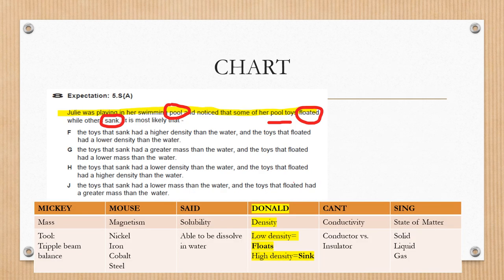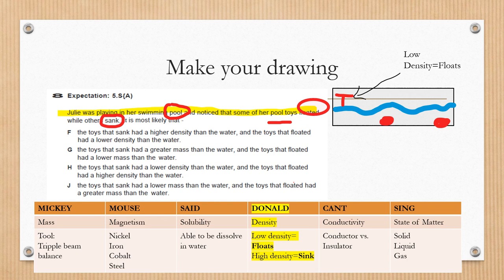Now I need to find out what property of matter is Julie noticing while playing in her swimming pool. I write down my chart: Mickey Mouse Said Donald Can't Sing. And because of my important words, I noticed that this question is about density. Now I'm gonna make a drawing. There's a swimming pool and there's some toys that are floating and some toys that are sinking. Based on my chart, I know that the toys that are floating are those that have low density. The toys that are sinking are those that have high density.